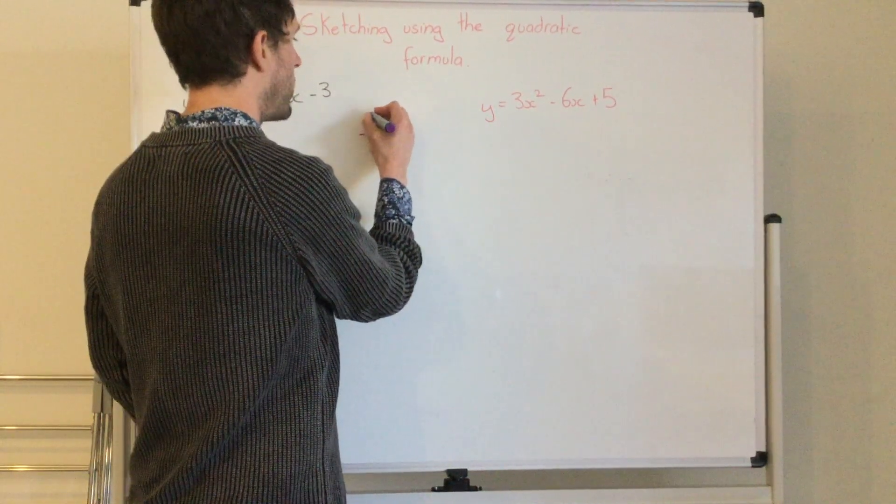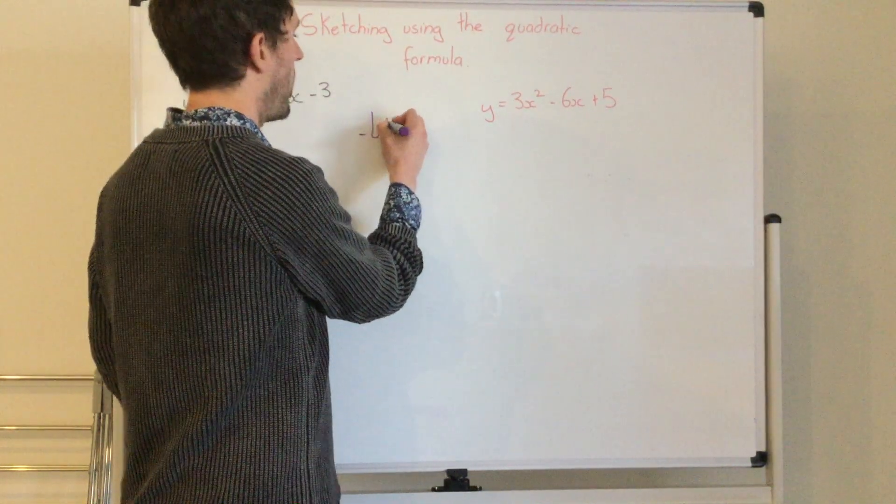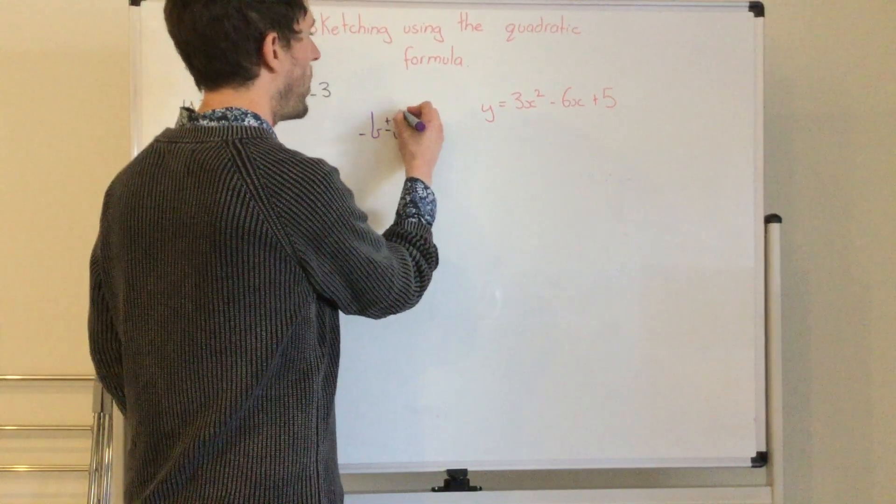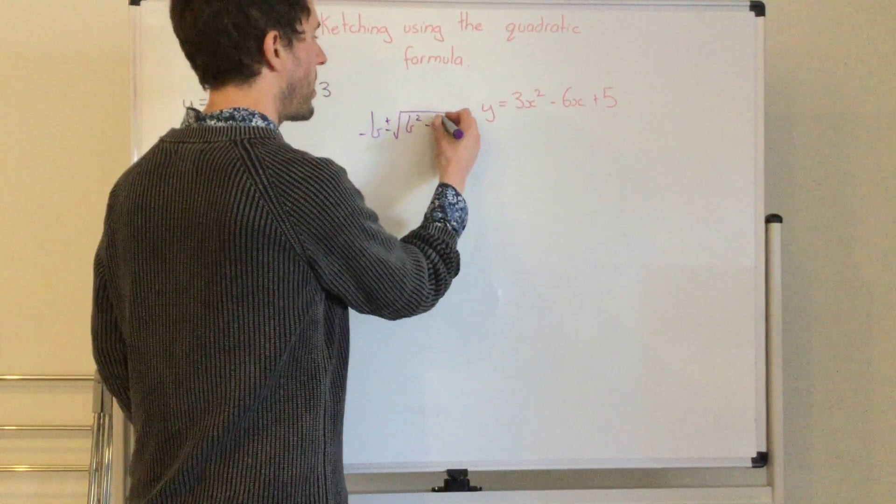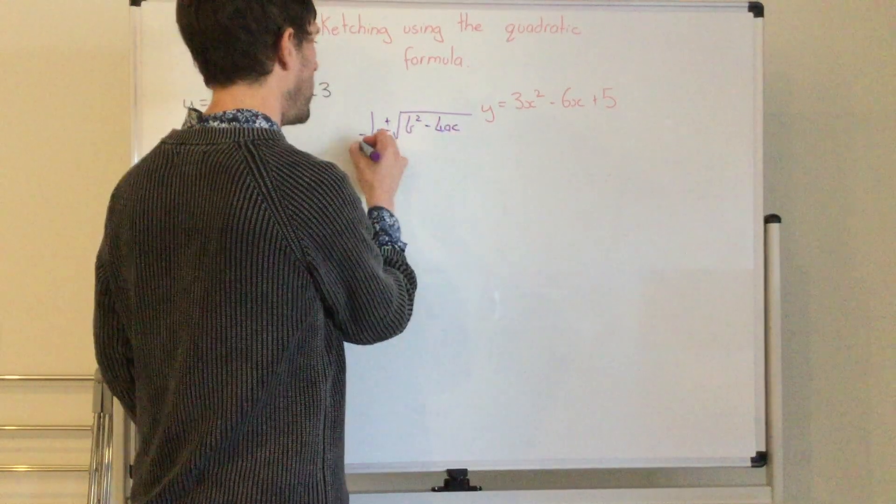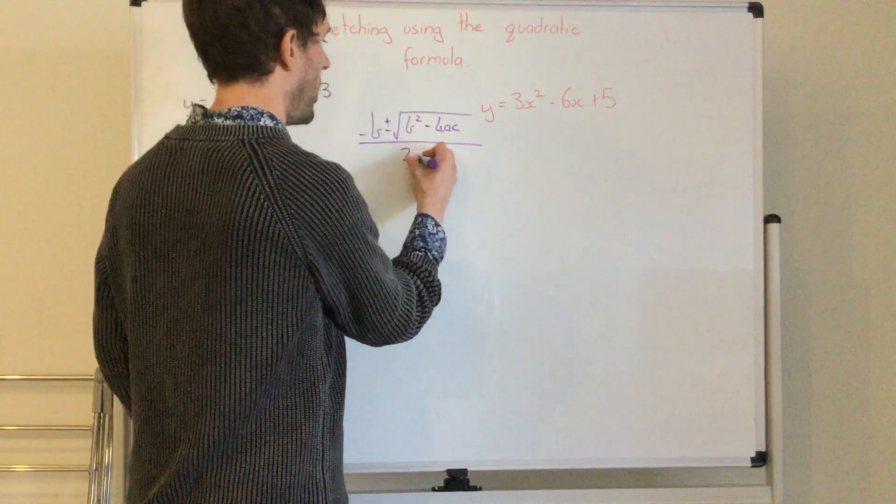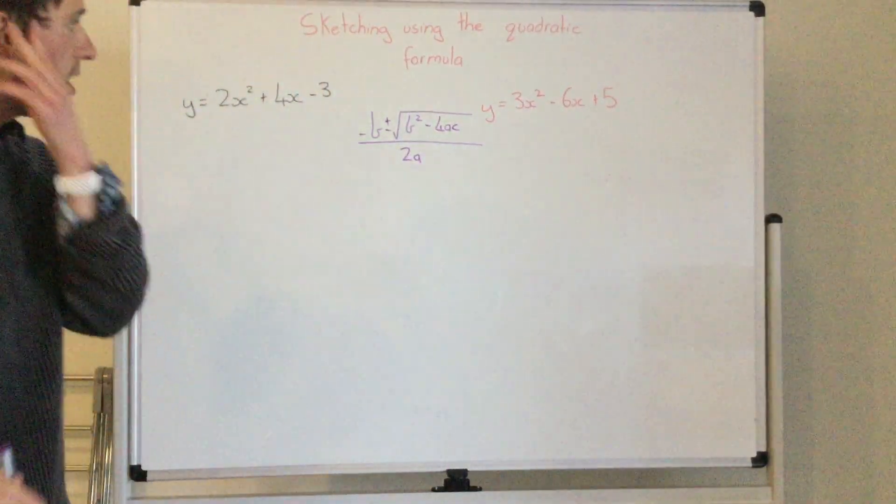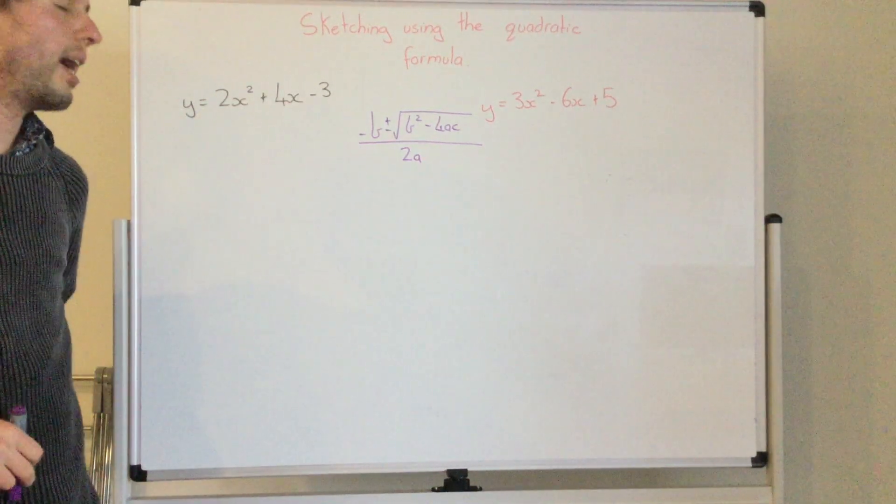So our formula is negative b plus or minus the square root of b squared take 4ac divided by 2a. So that is our formula and that will give us our x values.